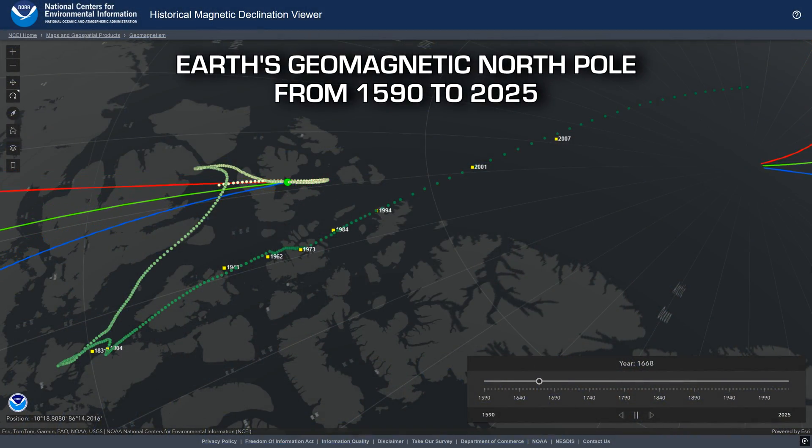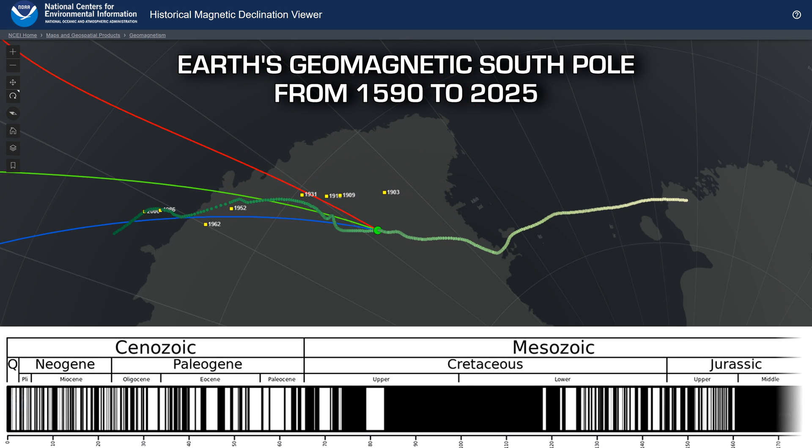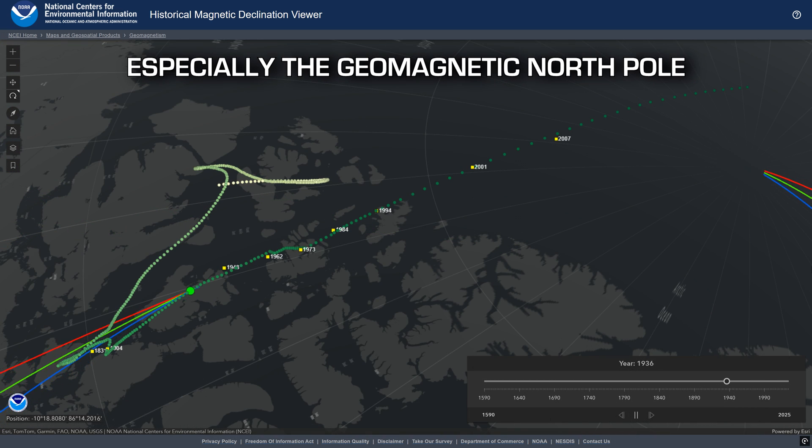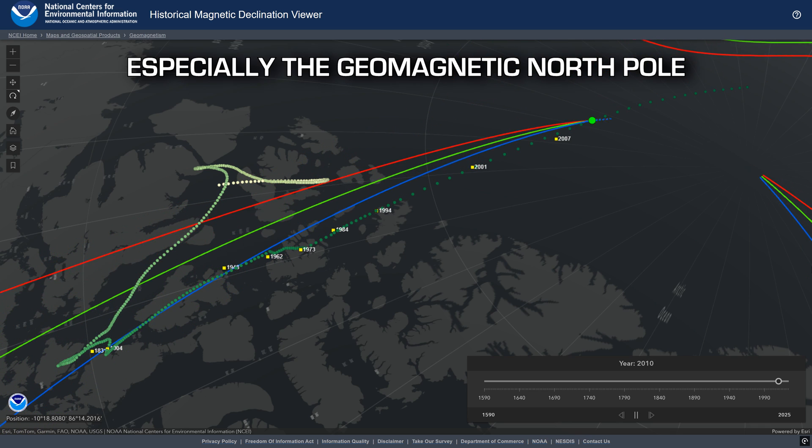The magnetic poles aren't fixed in place, however. They're always wandering as the molten metals around the planet's core constantly swirl and rotate, sometimes staying relatively stable for long periods of time. But recently, throughout this last century especially, the magnetic poles have been accelerating faster than we've ever witnessed before. Is this a sign that the magnetic poles are getting ready to flip soon?